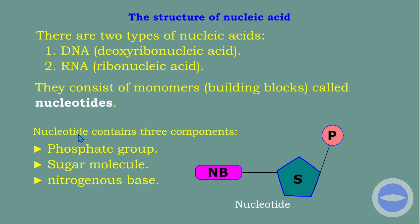A nucleotide contains three components. Component one is a phosphate group. Component two is a sugar molecule — the phosphate is bonded to the sugar molecule. Component three is a nitrogenous base, which is also bonded to the sugar molecule. If you pack these nucleotides together, you end up with either DNA or RNA.